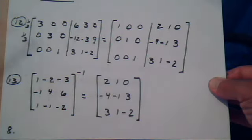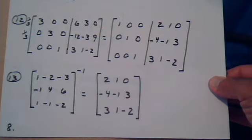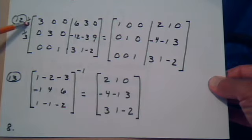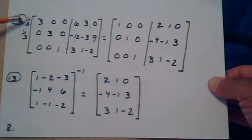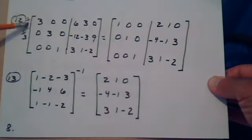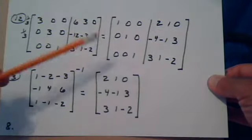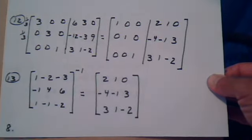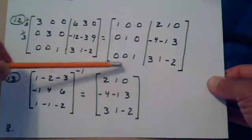To get ones, just multiply by the reciprocal of the value in that position. I want a one here, so multiply by one-third; I want a one here, so multiply by one-third again. You multiply the whole row by that number — one-third times this whole row, one-third times this whole row. Slide them over and notice we have zeros where we need them and ones where we need them. We have transformed the left matrix into the identity.